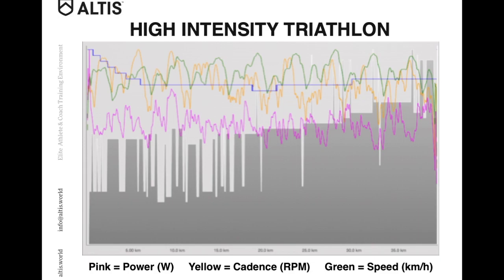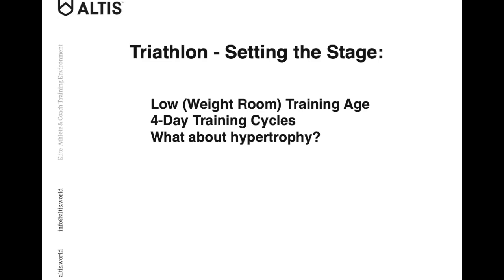In this graphic we can see a little bit of the high-intensity nature of Olympic level triathlon. In the pink we have wattage or power output, yellow is cadence and RPM, and green is the speed. The gray bars are the elevation throughout, and the blue is the temperature. We can see just from the elevation profile that there's going to be some high intensity involved, and that manifests in the power, the cadence, and the speeds.